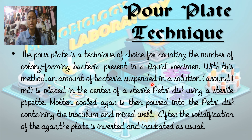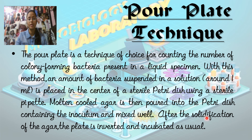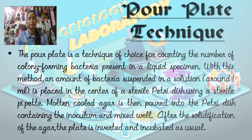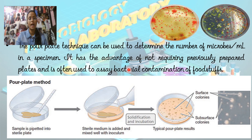Without plating we cannot find the number of colonies after serially diluting. In this method, an amount of bacteria suspended in a solution — around 1 mL — is placed in the center of a sterile petri dish using a sterile pipette. Molten cooled agar is then poured into the dish containing the inoculum and mixed well. After solidification of the agar, the plate is inverted and incubated as usual.